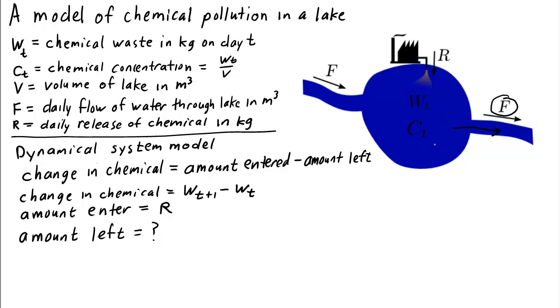Since we assume that the chemical is well mixed throughout the whole lake, to get the amount of chemical that left, we just need to take f and multiply by the concentration c sub t. But we really don't want to use c sub t because that's not our state variable. We know that c sub t is just the amount of waste w sub t divided by v. So the amount of chemical that leaves the lake in one day is f times w sub t over v.